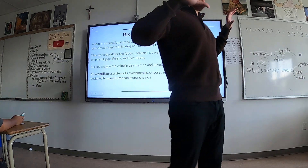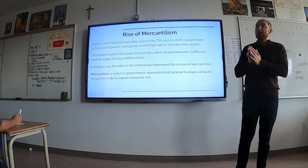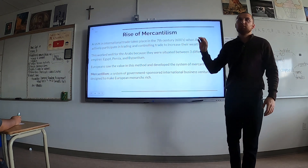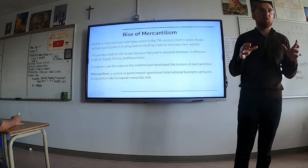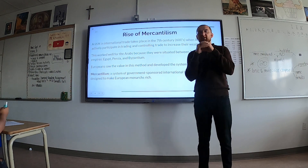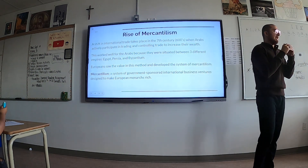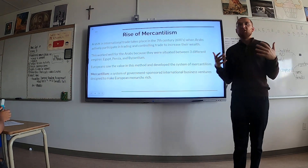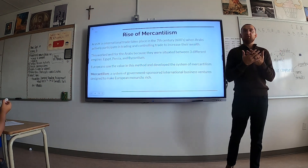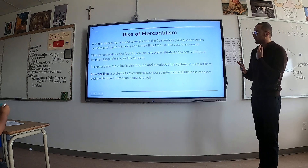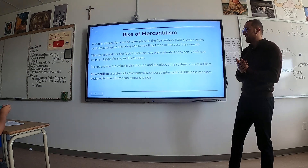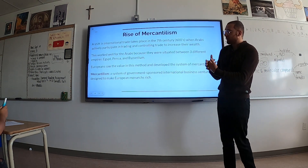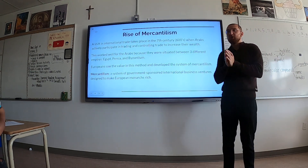By the time Islam comes around and becomes the ruling narrative for this group of people, they're unified and all of a sudden they become very powerful, in a very good position. As we saw on that world map, they are in the middle of the Silk Route. They are a connection to Asia, to Europe, to Africa, so a lot of goods and a lot of valuable things pass through the Arab world, which allowed them a great degree of control. When they actively participate in trading and controlling trade to increase their wealth, the word eventually for that — we call it mercantilism.